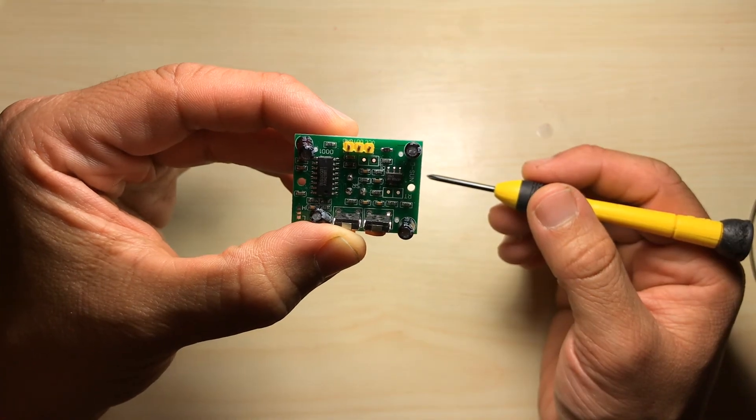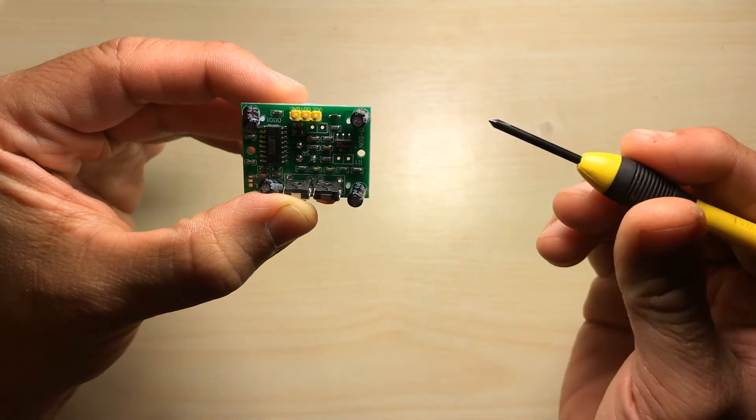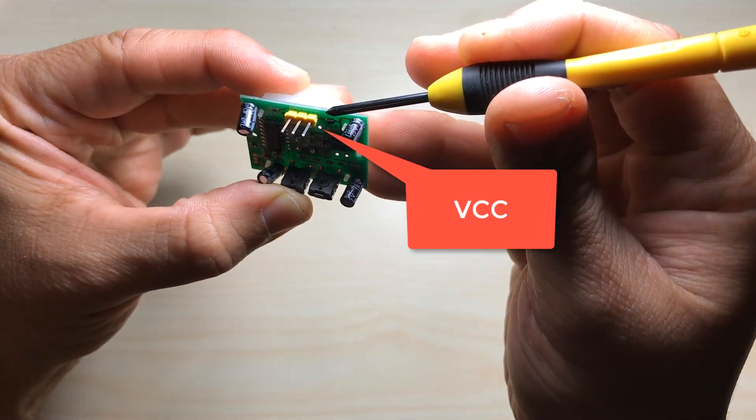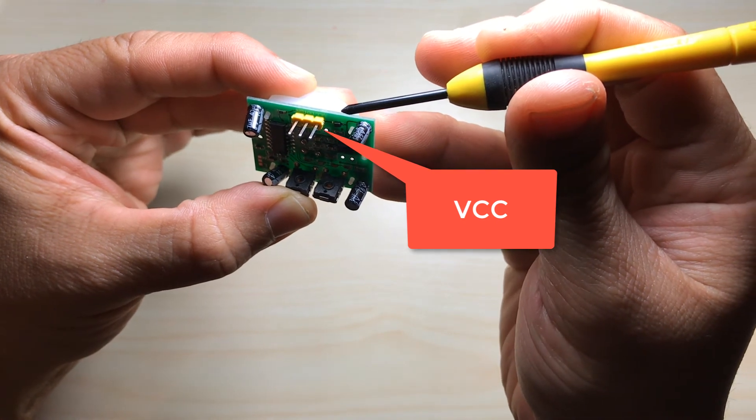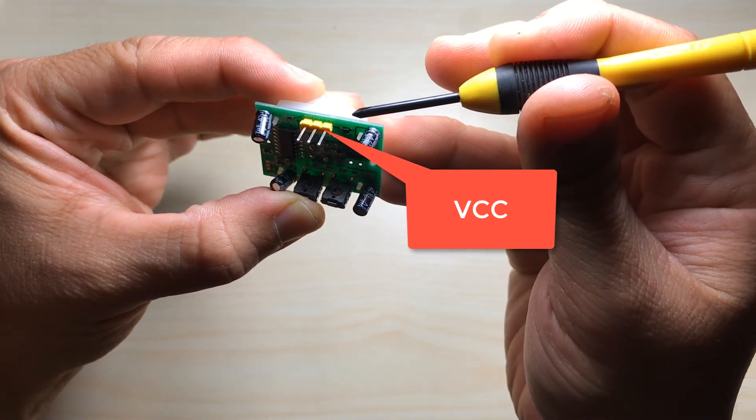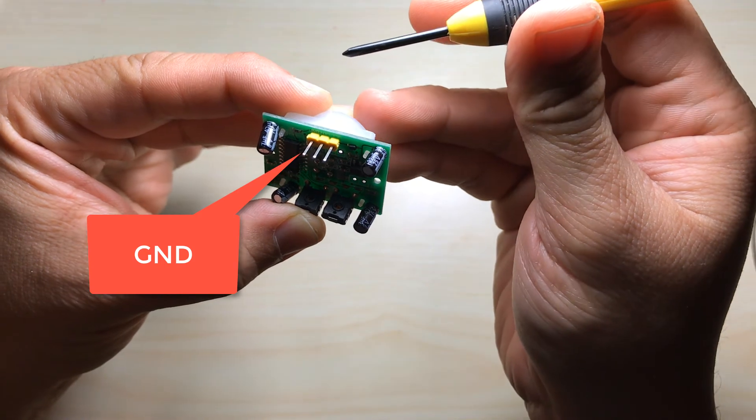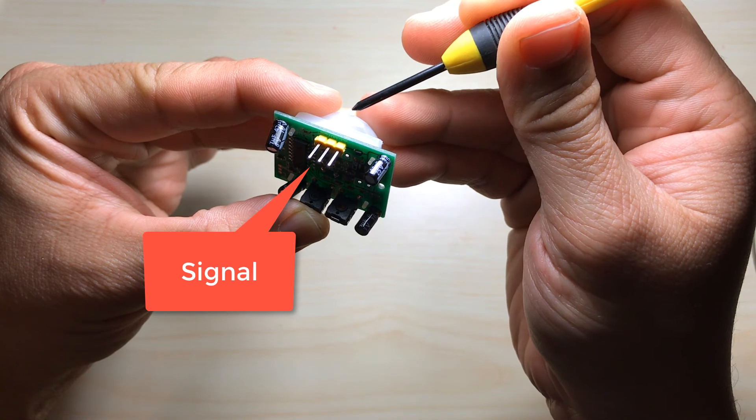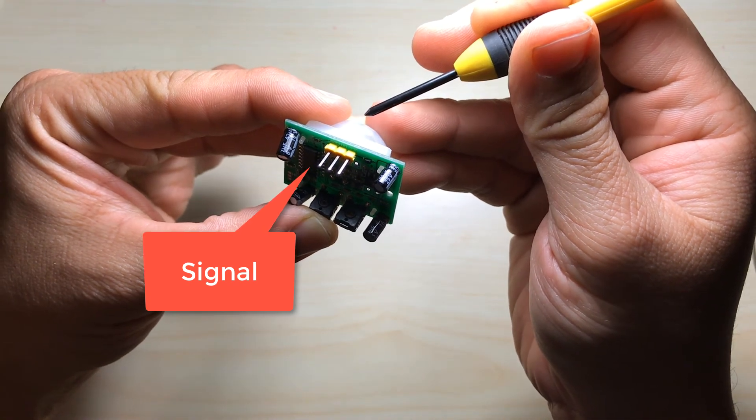The PIR sensor has three pins. Here on the right VCC or power which is typically connected to 5 volts. A ground pin which is connected to ground and in the middle here is a signal pin or an out pin.